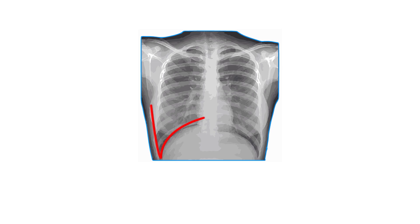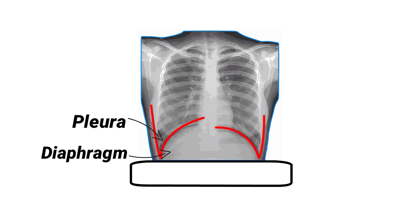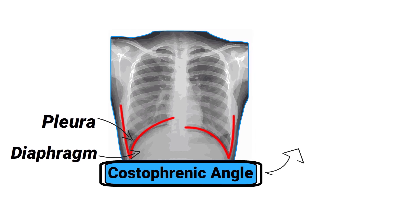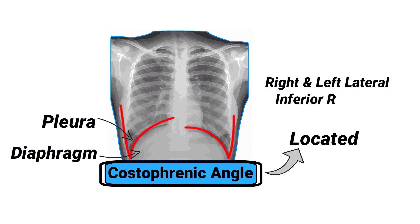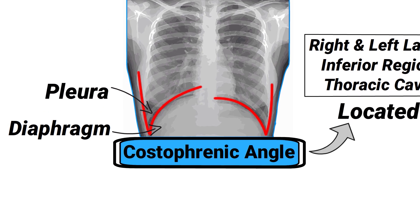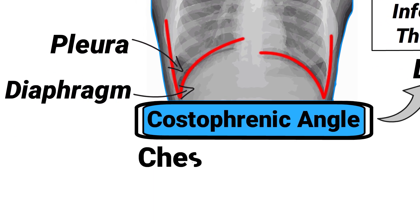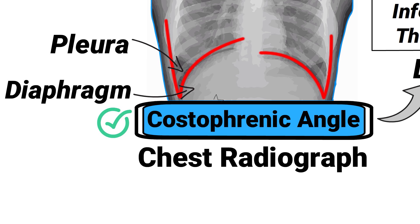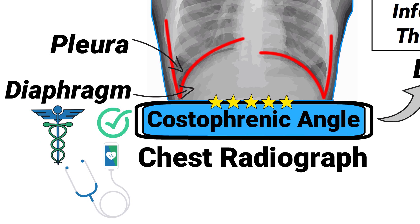The angle where the pleura meets the diaphragm is known as the costophrenic angle. It is located in the right and left lateral and inferior regions of the thoracic cavity. During a chest radiograph, this angle should be clearly visible, making it an important anatomical landmark for respiratory therapists and medical professionals.